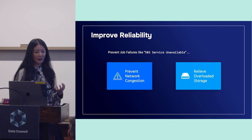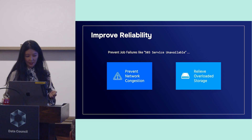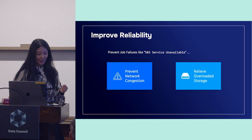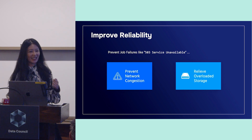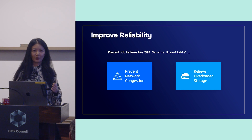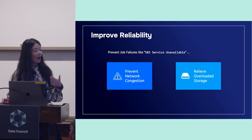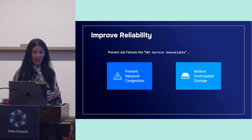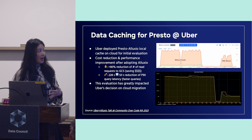Finally, think of cache as a buffer or a shield to remove job failure challenges — because there are fewer requests through your network and fewer requests directly to your underlying storage. So it really helps with the job failure problem.